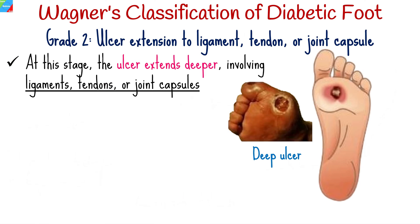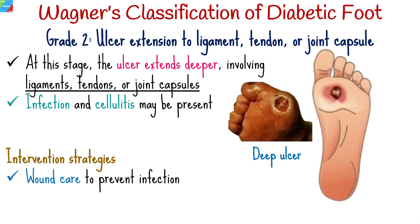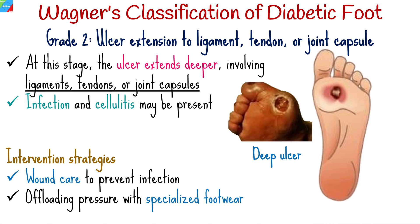Grade 2: At this stage, the ulcer extends deeper, involving ligaments, tendons, or joint capsules. Infection and cellulitis may be present. Intervention strategies include aggressive wound care to prevent infection, regular monitoring for signs of worsening ulcers, and offloading pressure with specialized footwear.